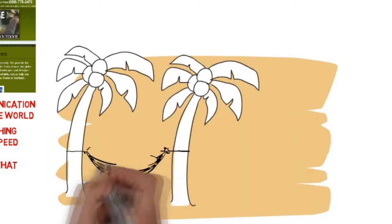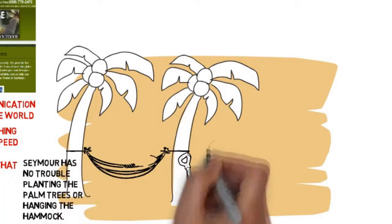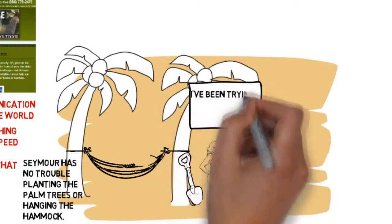Two minutes later, Rita appears magically in front of the palm tree, telling him that she's been trying to get a hold of him for an hour. But she gets no signal. Seymour thinks it's those damn palm trees. They're working.